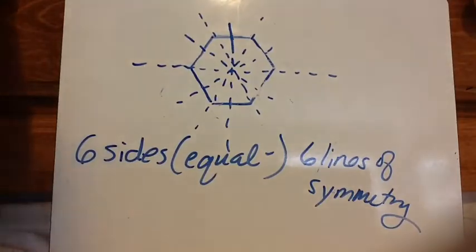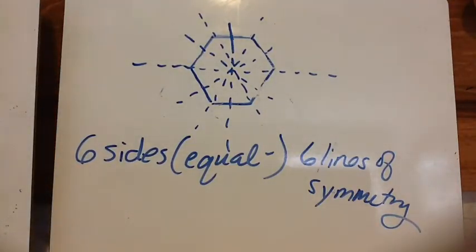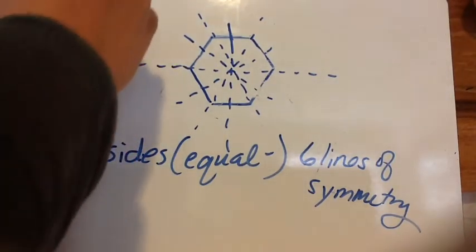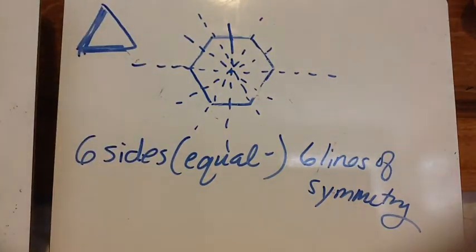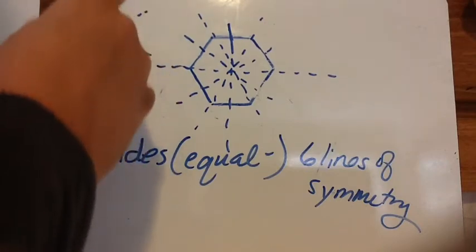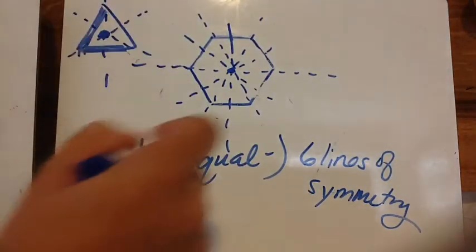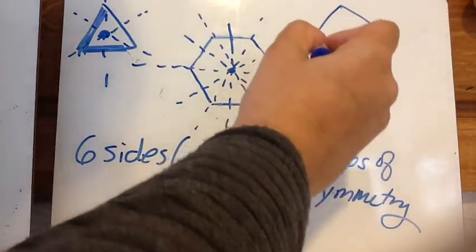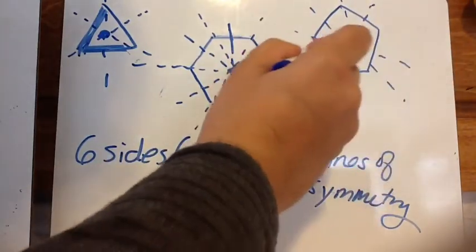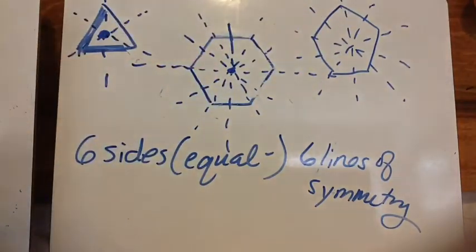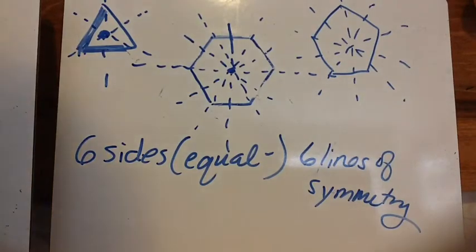So equal sides - however many equal sides there are, that's how many lines of symmetry there are. If you have an equilateral triangle, it works - lines of symmetry here, here, and here, and it must fold through the center. A pentagon has five equal sides and five lines of symmetry. So square has four, equilateral triangle has three, pentagon has five, hexagon has six, a heptagon with seven equal sides and an octagon with eight equal sides will all have that many lines of symmetry.